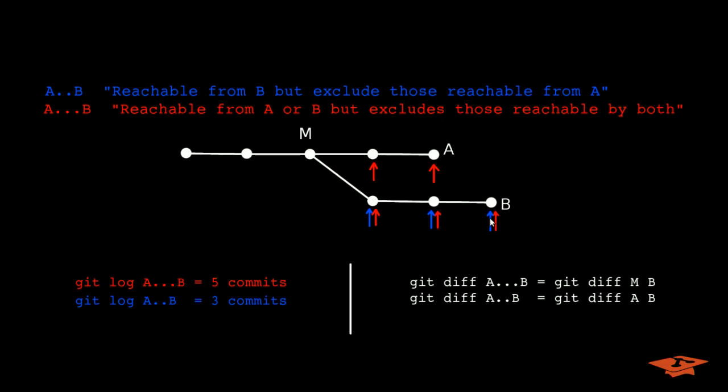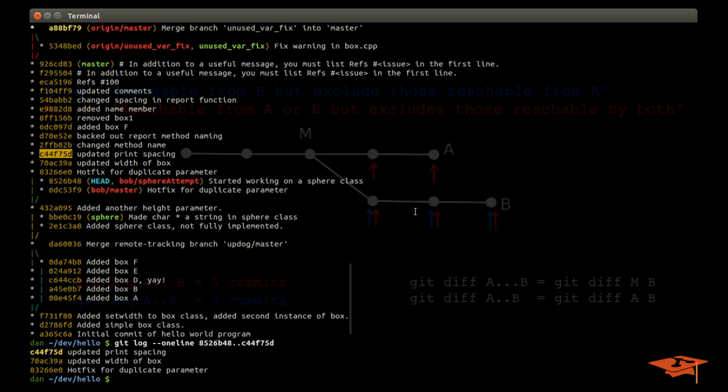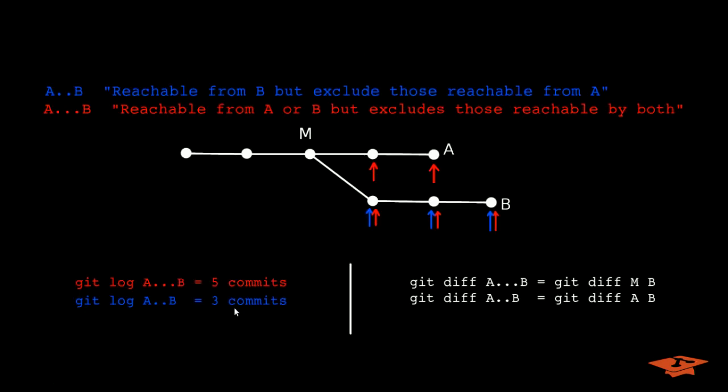Because we've set it up similarly, we're going to expect three commits here. We're going to actually expect to see the commits here in git log. So we told it to give us the commits in this range. Remember we did A here, B here. So the commits that we see are the three commits back from B: C44, 70ac, and 832, which is exactly what we expect based on this graphic.